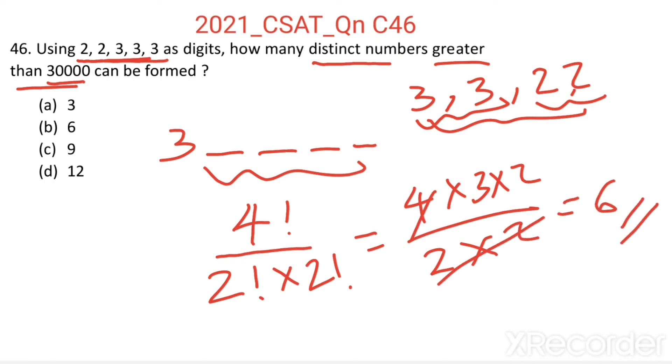So we can arrange these remaining 4 digits in these remaining 4 places in 6 ways. That means total distinct numbers greater than 30000 possible equals 6.